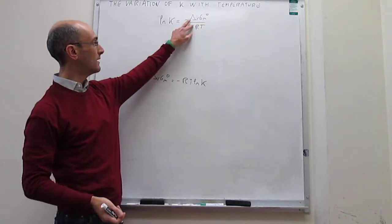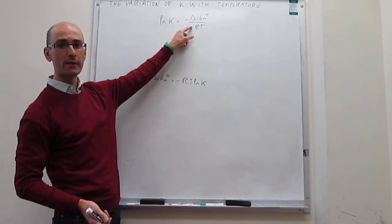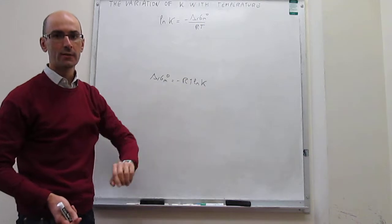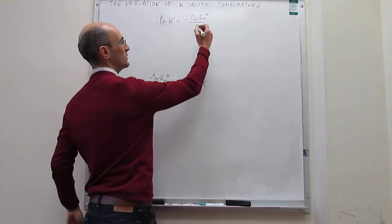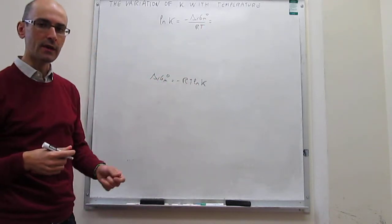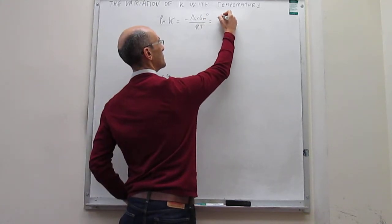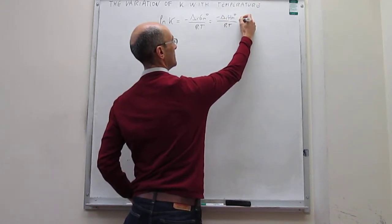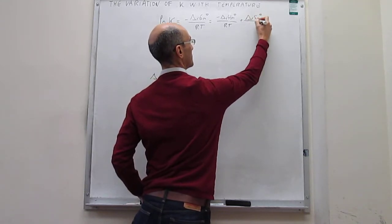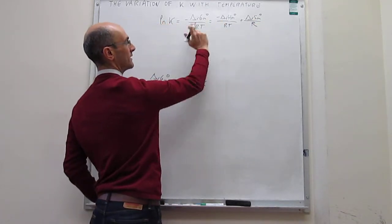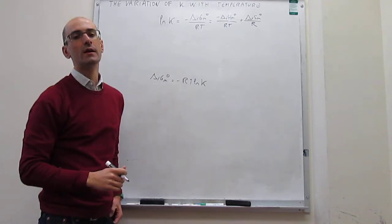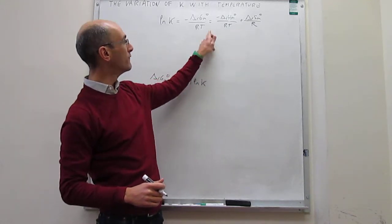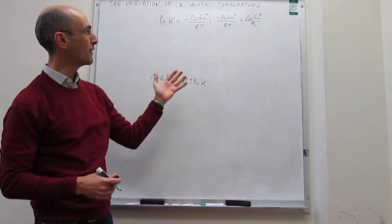The equilibrium constant then shows a dependence on temperature. Notice that the molar Gibbs energy depends on temperature, and there is also a temperature dependence in the RT denominator. To see exactly how this depends on temperature, we unfold the Gibbs energy into the enthalpy and entropy contributions: ln(K) = −ΔrHm° / RT plus ΔrSm° / R.